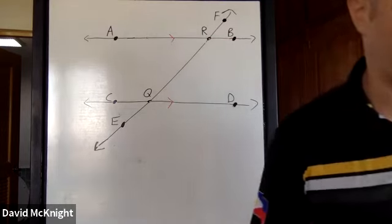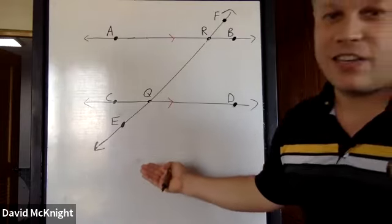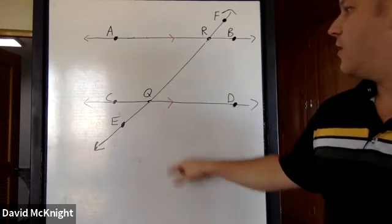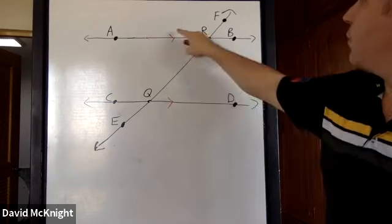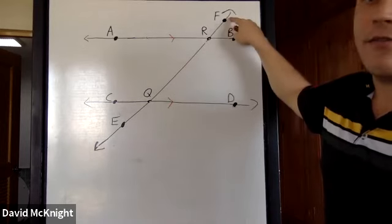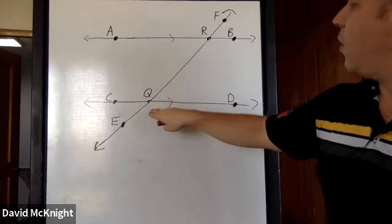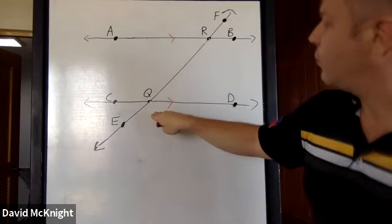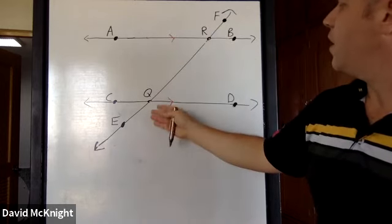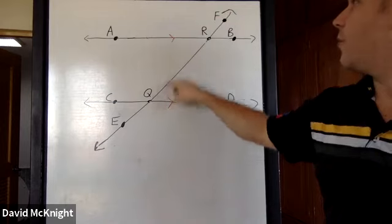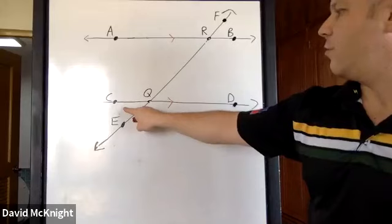Furthermore, angle CQR and angle QRB are also alternate interior angles — another congruent pair. Moving beyond that, we can look at alternate exterior angles. These are external angles, so angle ARF and angle EQD are alternate exterior angles — they're on alternate sides of the transversal on the exterior of the parallel lines. Those angles are congruent.